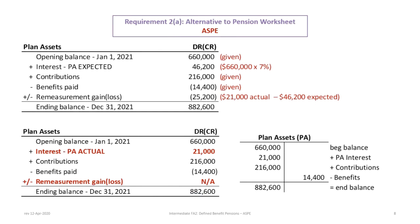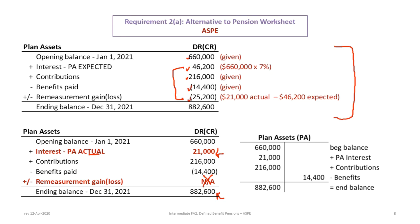Next, the alternative to the pension worksheet. For plan assets, the original approach — which is the same as under IFRS — uses the beginning balance of 660, plus the expected return, plus the contributions, minus the benefits, then the remeasurement gain or loss as the difference. However, if you know you're using ASPE and don't need to account for actual versus expected interest separately, we use a modified approach: replace the expected interest with the actual of 21,000, which eliminates the remeasurement gain or loss on plan assets, and we still end up with the same ending balance of $882,600.